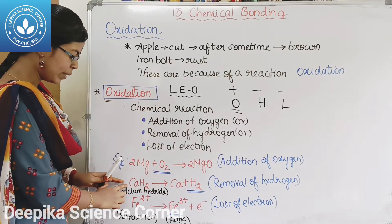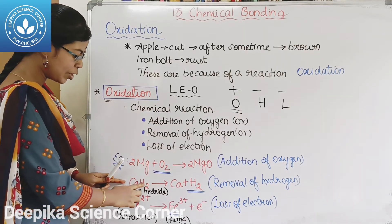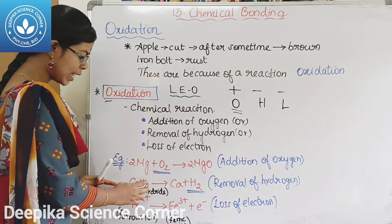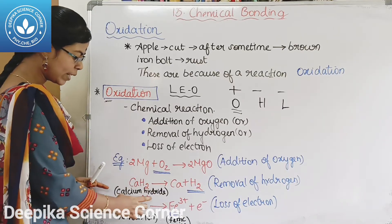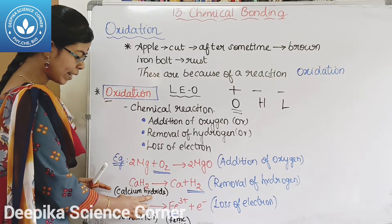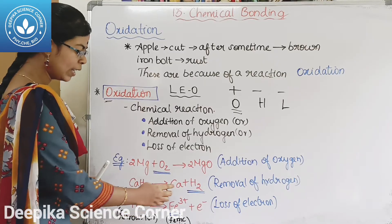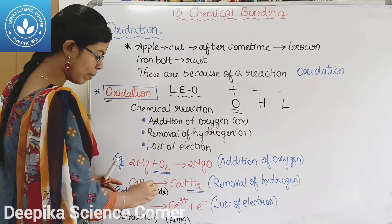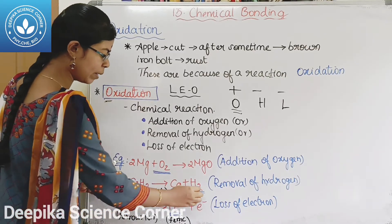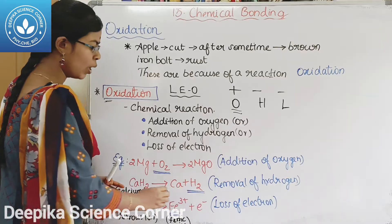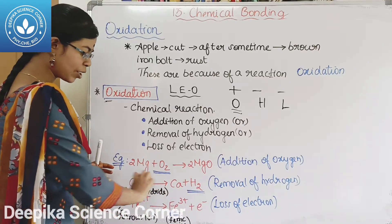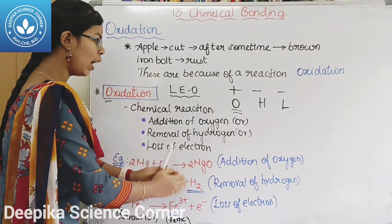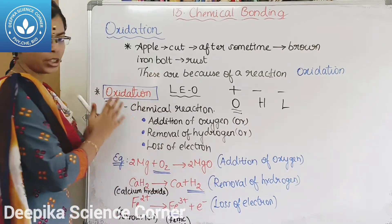Next example: CaH2 gives Ca + H2. CaH2 is calcium hydride. Now the hydrogen is removed — you can see it. So hydrogen is removed from the reaction. This is the oxidation reaction.